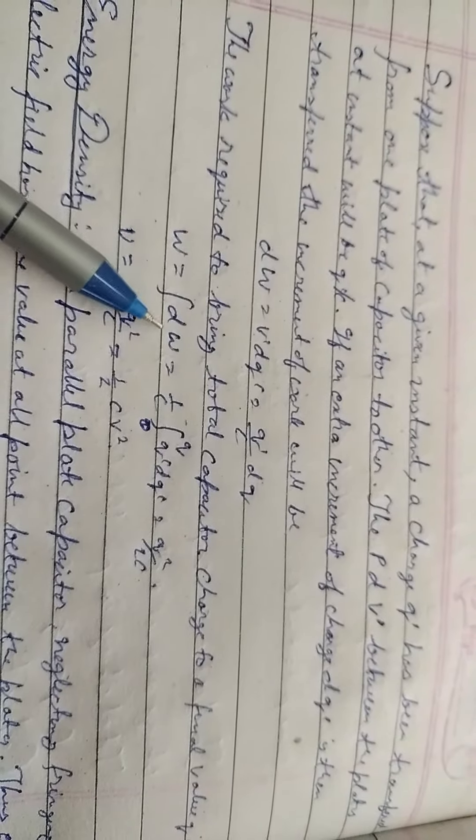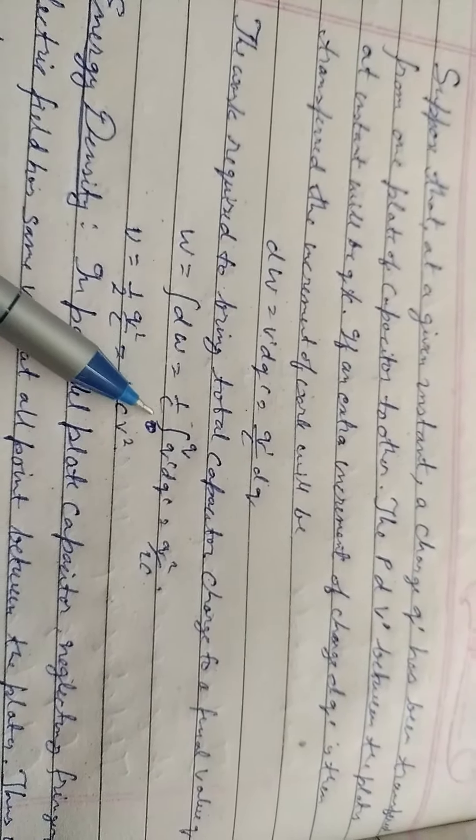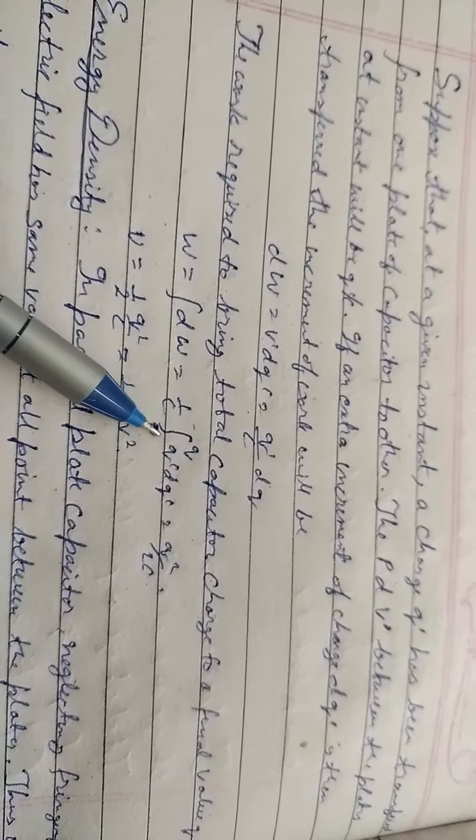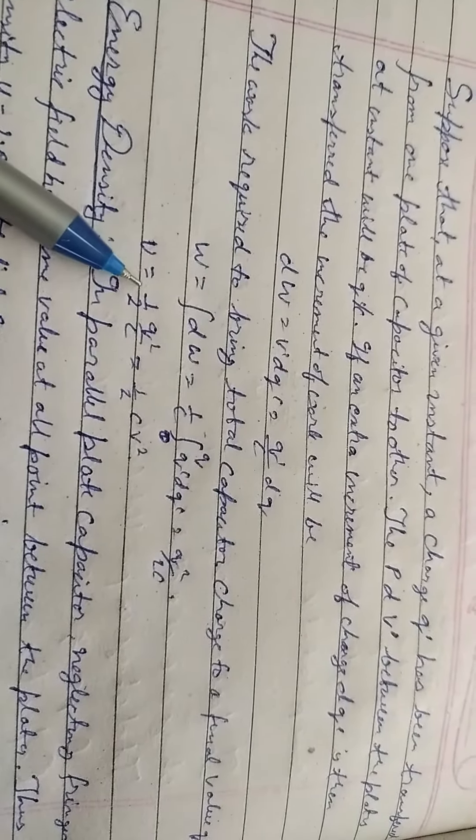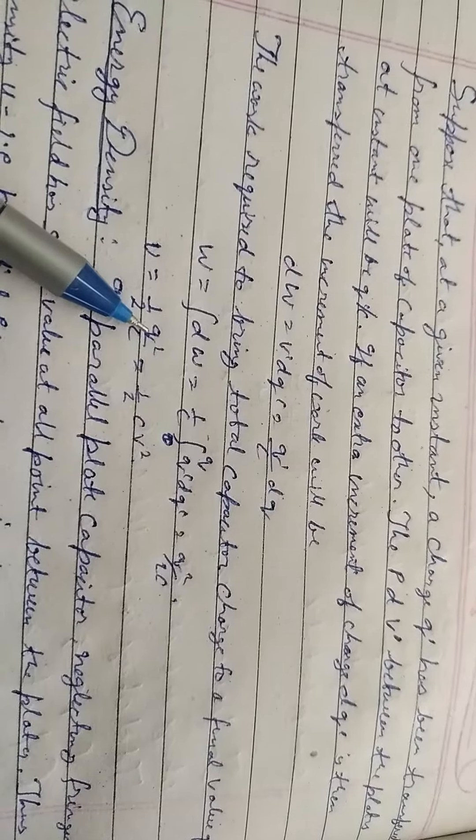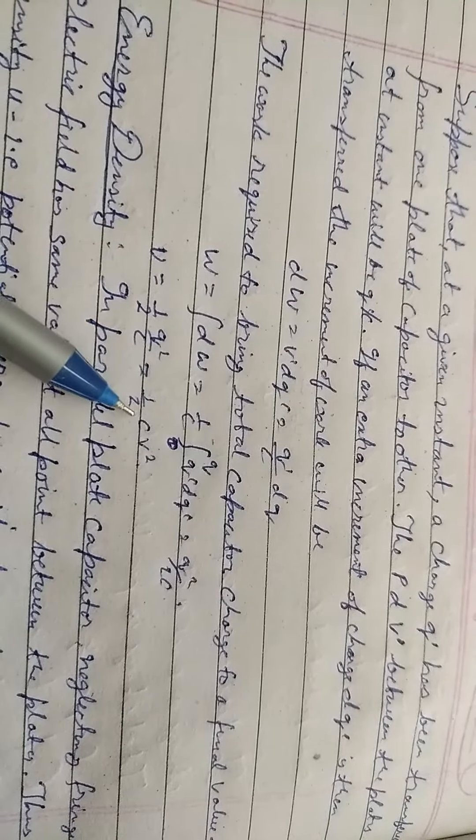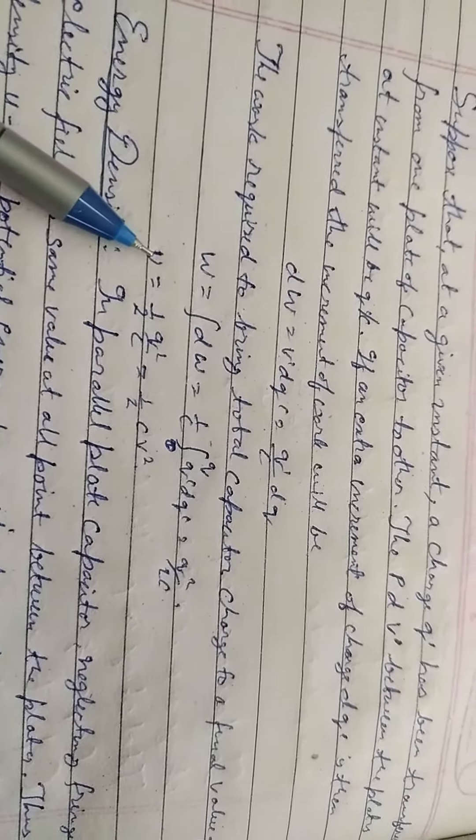is equal to integration of dW equals 1 by C, integration from 0 to Q of Q' dQ' equals Q' square by 2C. U equals 1 by 2, Q square by C equals 1 by 2, C V square, where U is potential energy.